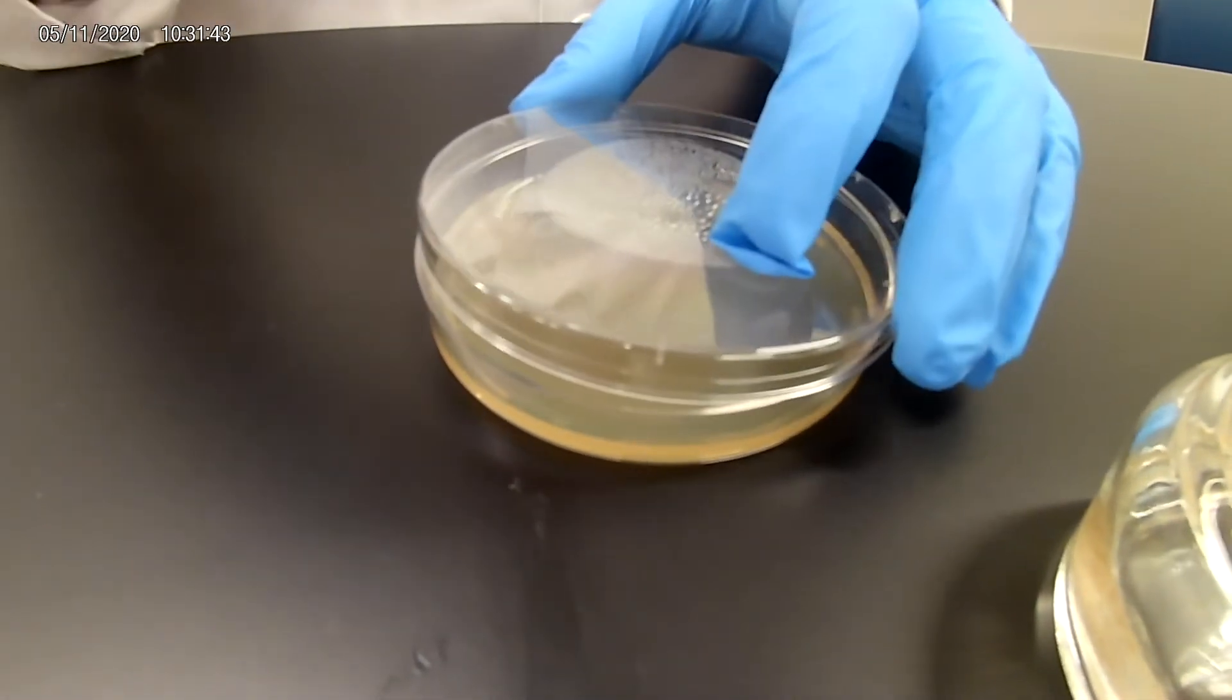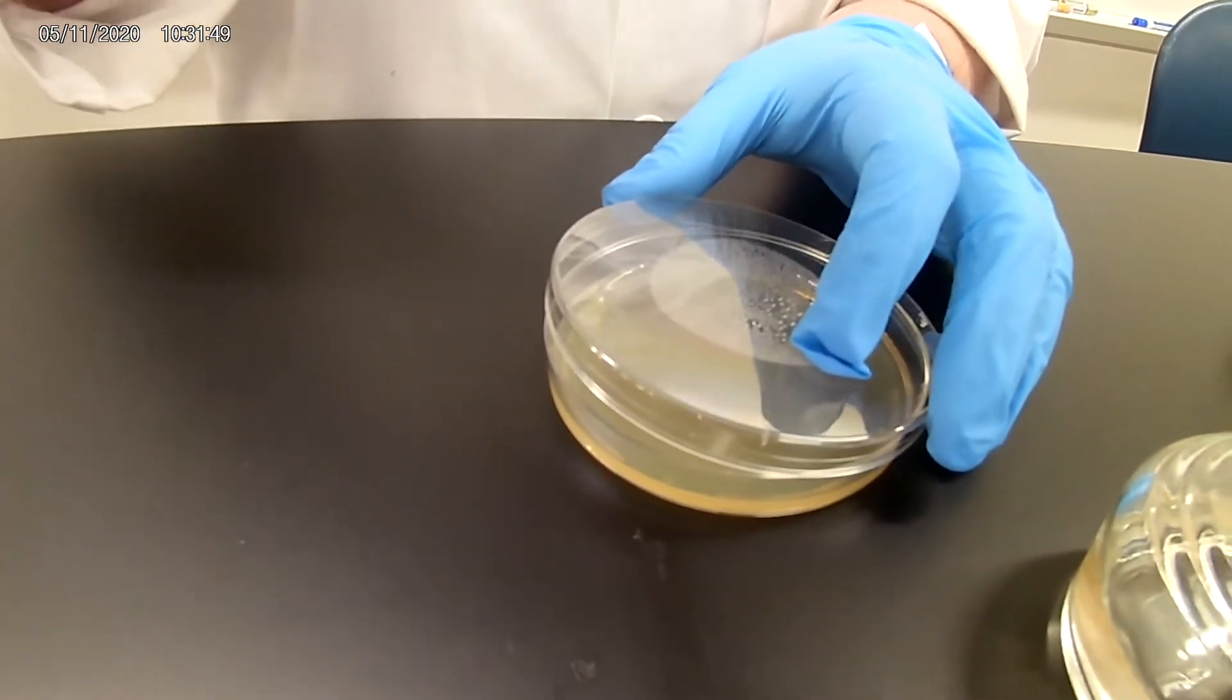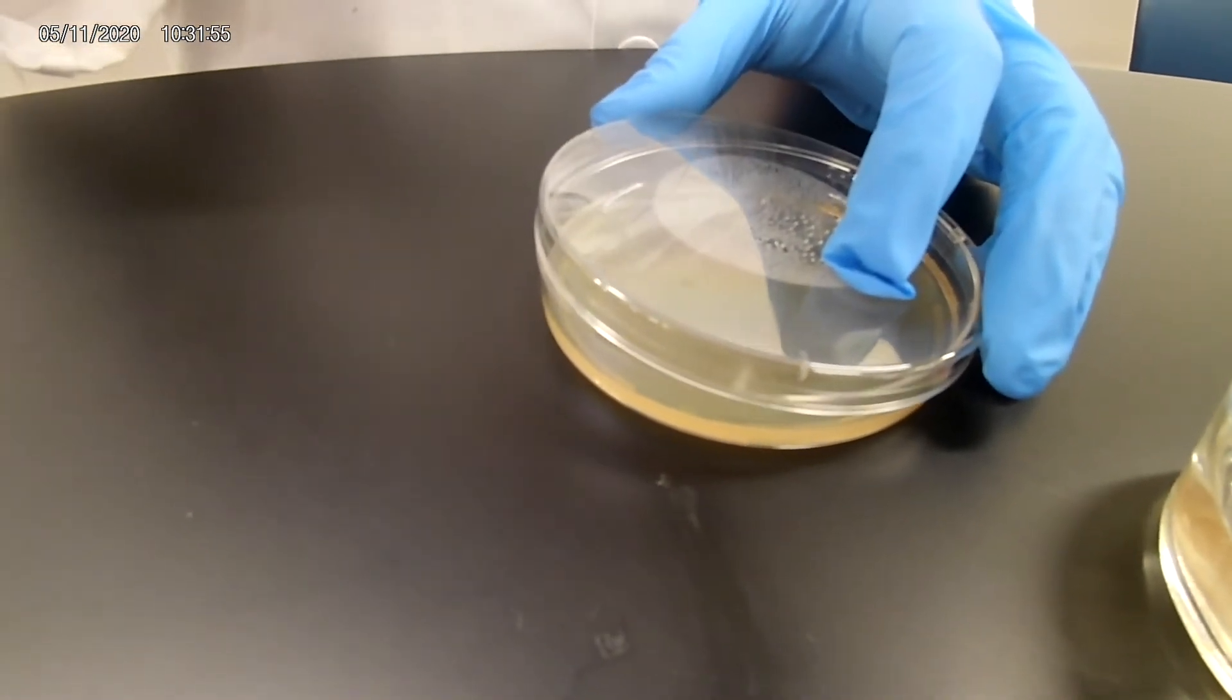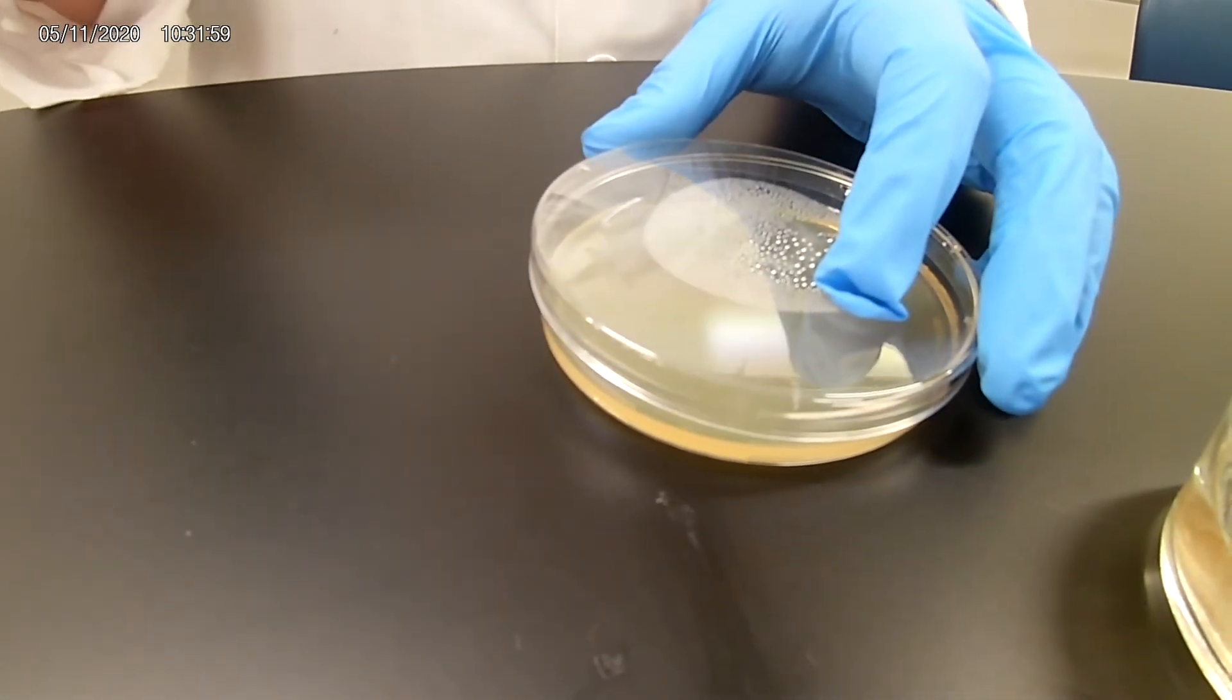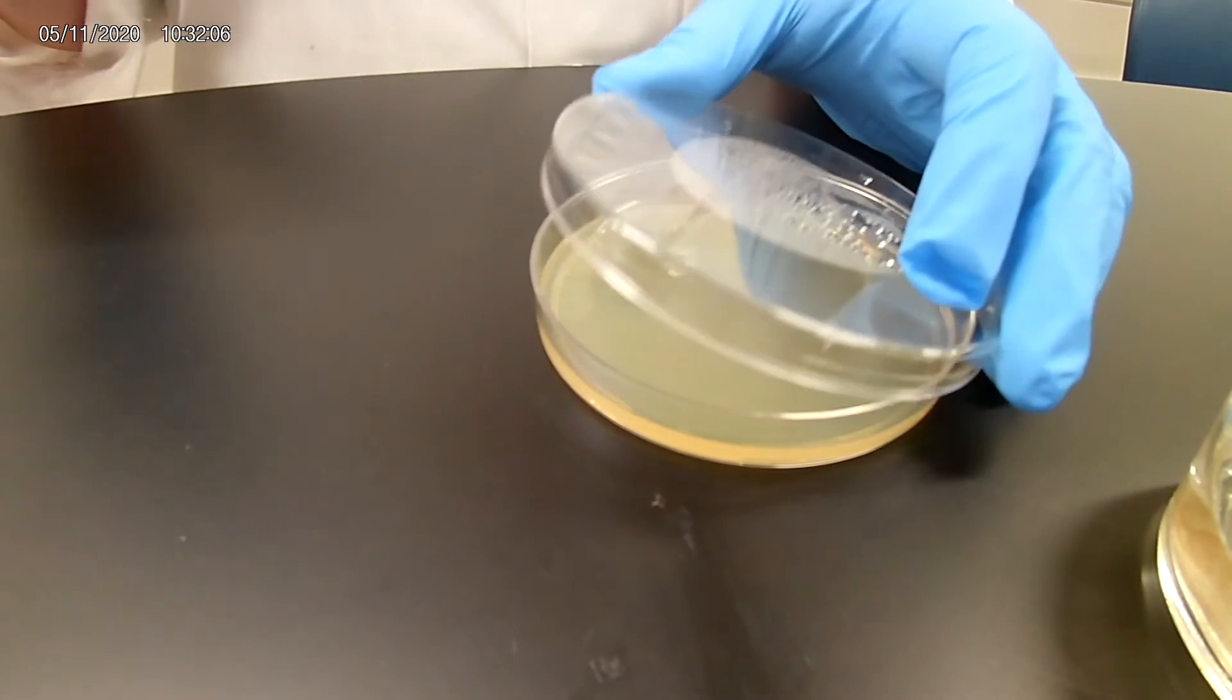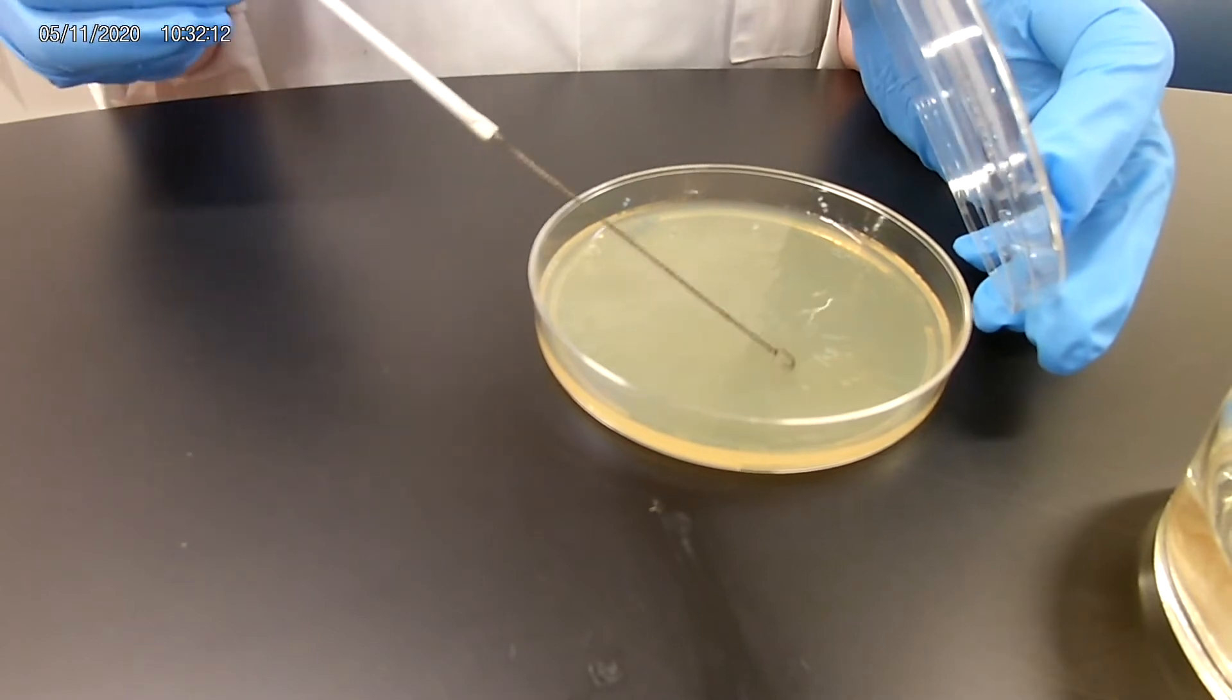Now you're going to flame the loop again to sterilize it. The idea behind this way is that we're going to spread it out in four different quadrants, but each quadrant is diluted from the previous one. So we're not going back into the original plate. We're going to go where we previously streaked over here, and now we're going to streak this way.